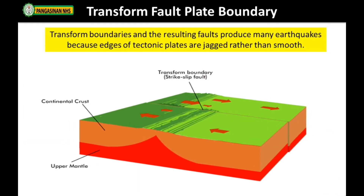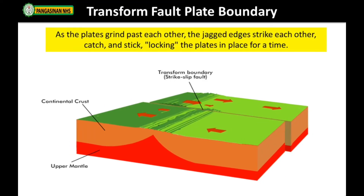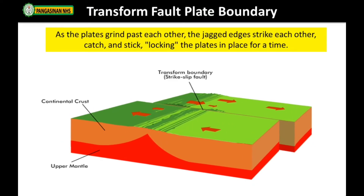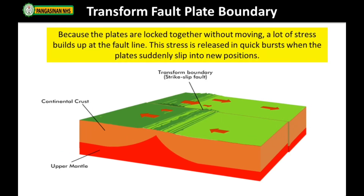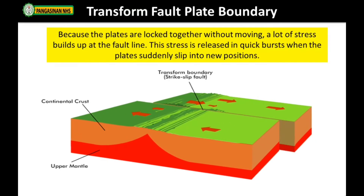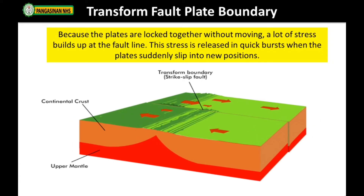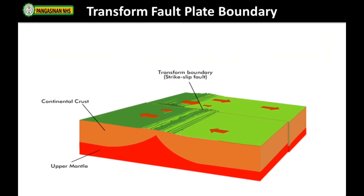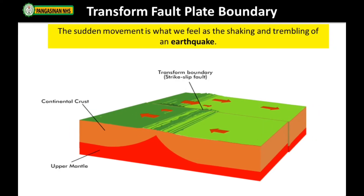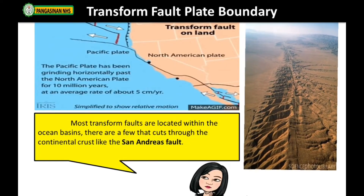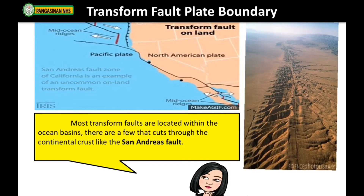Transform boundaries and the resulting faults produce many earthquakes because edges of tectonic plates are jagged rather than smooth. As the plates grind past each other, the jagged edges strike, catch, and stick, locking the plates in place for a time. Because the plates are locked together, a lot of stress builds up at the fault line. This stress is released in quick bursts when the plates suddenly slip into new positions — the sudden movement is what we feel as the shaking and trembling of an earthquake. Most transform faults are located within the ocean basins, but a few cut through continental crust, like the San Andreas Fault.